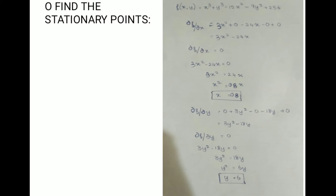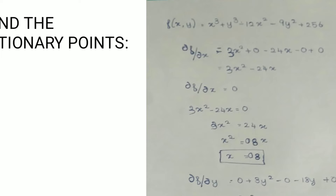To find the stationary points, we have f(x, y) = x³ + y³ - 12x² - 9y² + 256. Now find ∂f/∂x by looking at the x terms only. x³ differentiates to 3x²; y³ has no x term so it gives 0; the constant gives 0. So ∂f/∂x = 3x² - 24x.